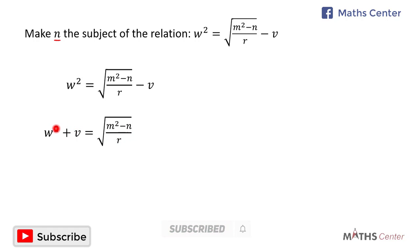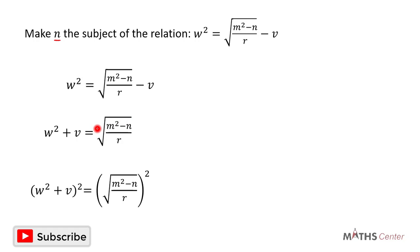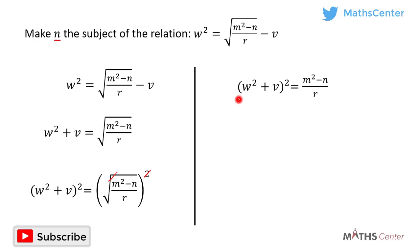I'll square both sides of the equation to remove the square root. Squaring gives us w squared plus v, all squared, is equal to the square root of m squared minus n divided by r — and the square cancels the square root — giving us w squared plus v, all squared, is equal to m squared minus n, divided by r.